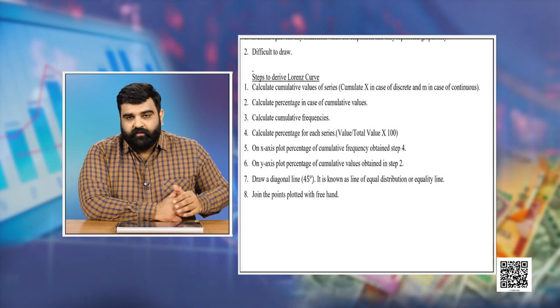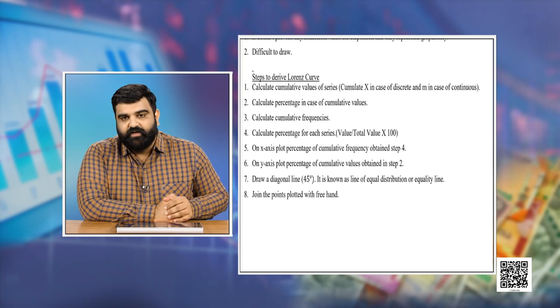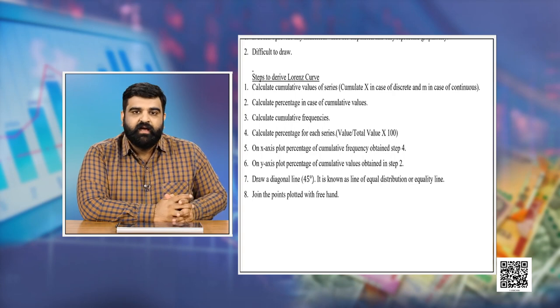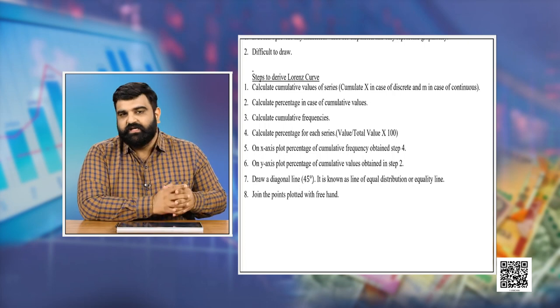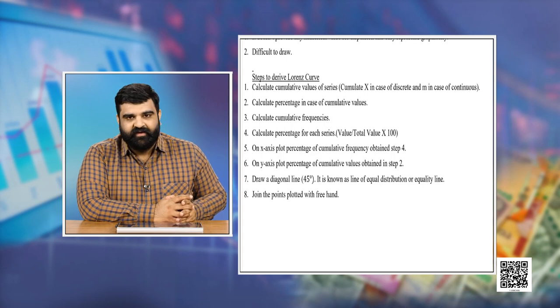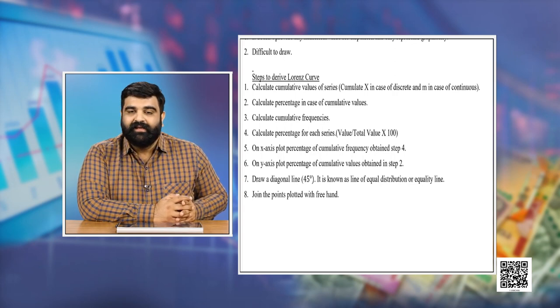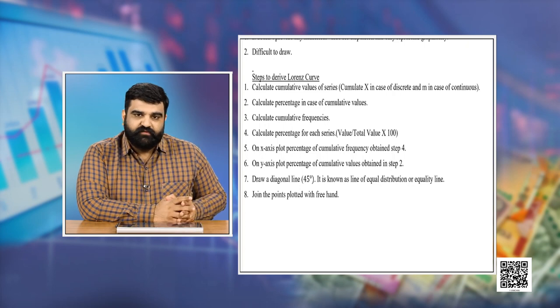The steps to draw the Lorentz curve are: first, cumulate the values in the series — for a discrete series, cumulate the values of the variable and also the frequencies. Then find out the percentages for each component based on the total value. Then plot them on a graph, first drawing a 45-degree line also known as the equality line or line of equal distribution. After drawing this line, plot all points of the series and join them with a free hand.